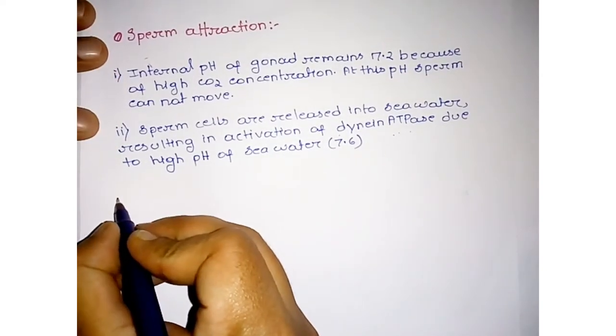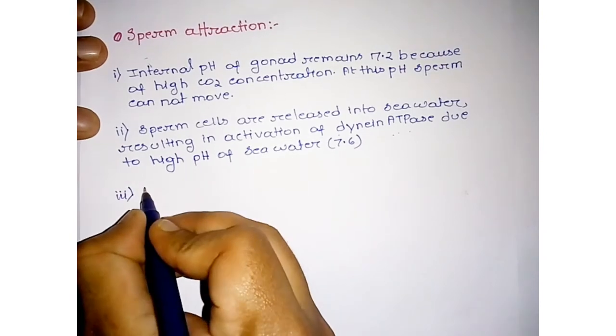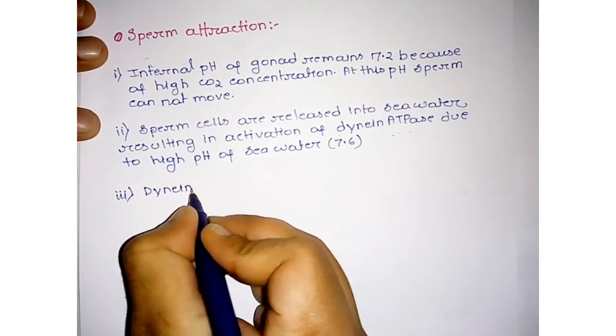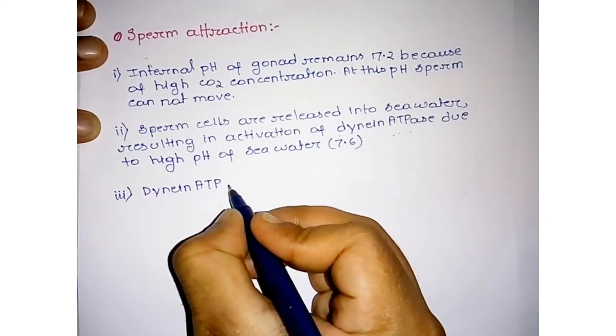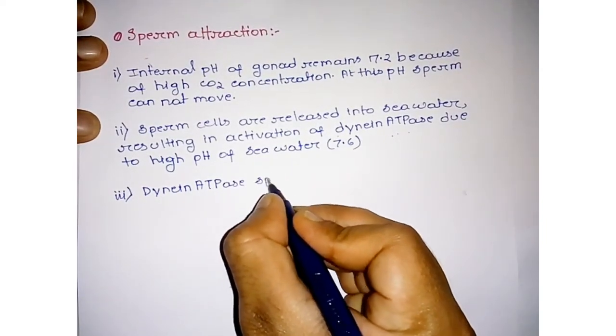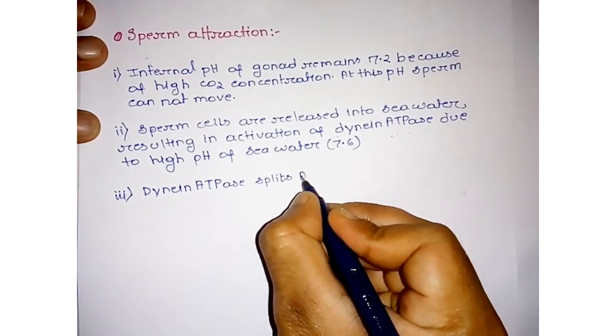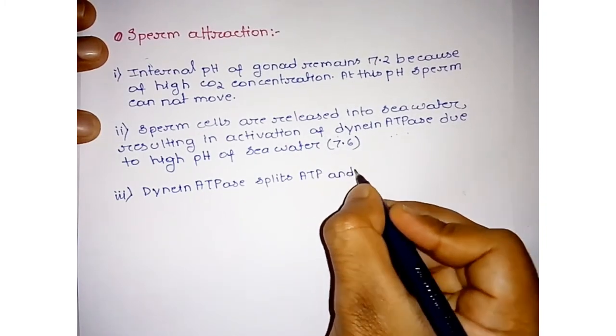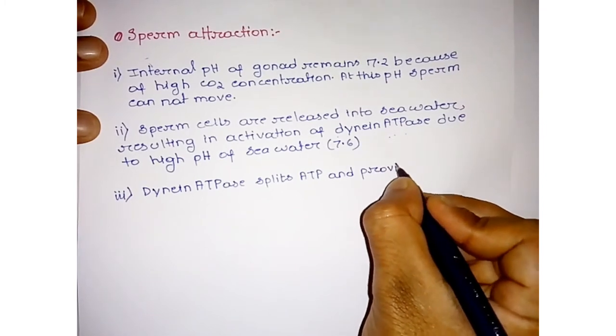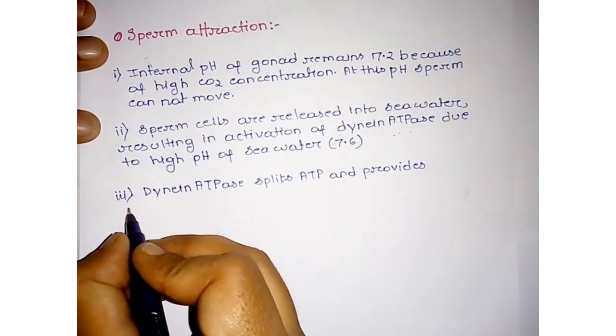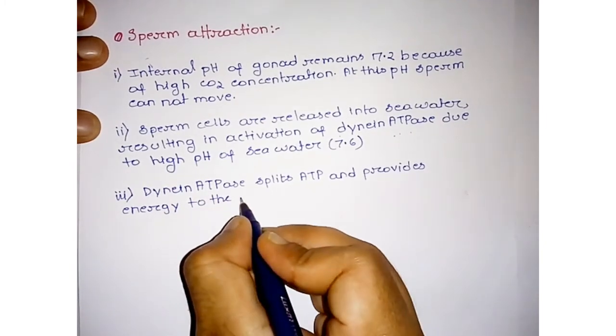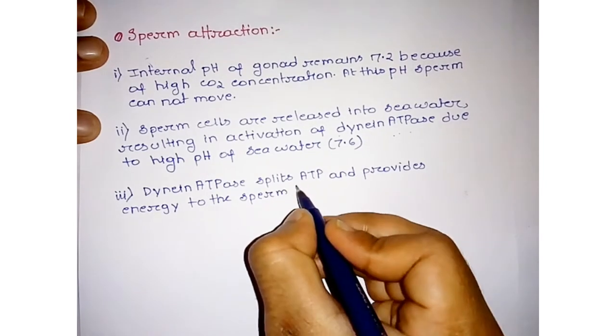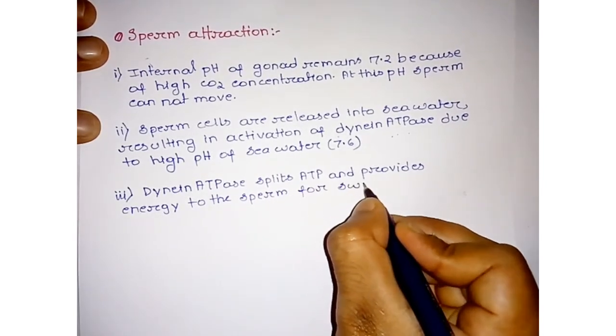What is the role of dynein ATPase? Dynein is a type of motor protein. Dynein and kinesin - we discuss it when we enter into the topic of cytoskeleton. Dynein ATPase splits ATP and provides energy to the sea urchin sperm for swimming.